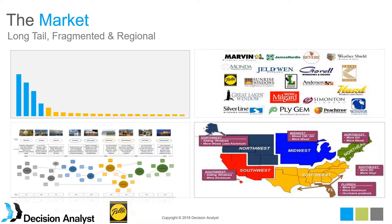There is also a regional dimension that influences the choice of products bought. Depending on where consumers are living, that dictates the type of windows, the operating types — whether it's double hung, single hung, or sliding windows — and also the kind of materials. Down south you have more aluminum, whereas in the Midwest and Northeast you have wood. Some of it is also dictated by the style of homes.